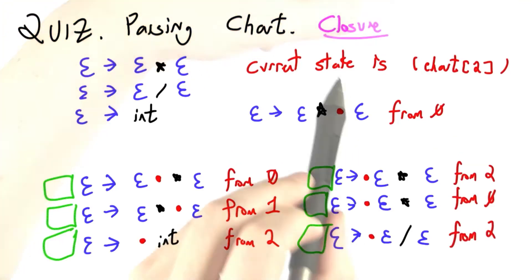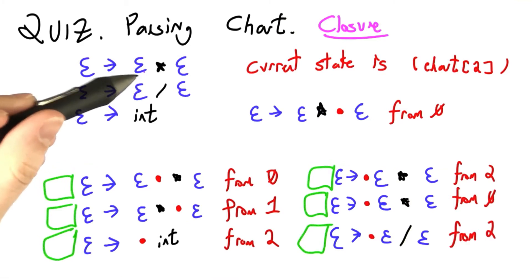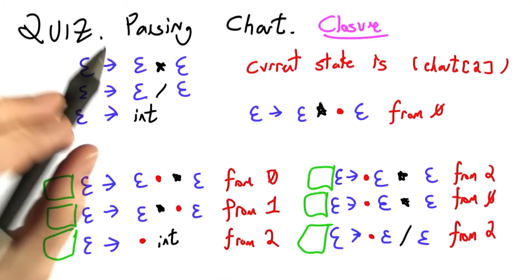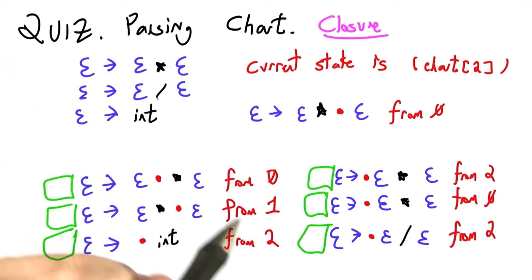Another quiz about parsing charts. Although the hint for this one is to think about the closure. I've written a grammar on the left. It's like the e plus e, e minus e grammar, but this time we're using multiplication and division instead for no adequately explored reason.